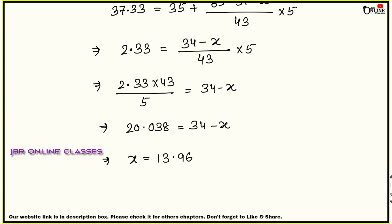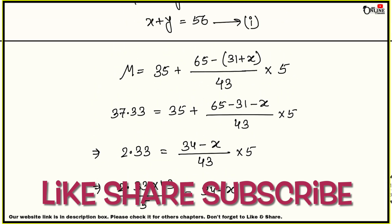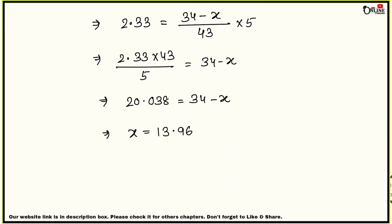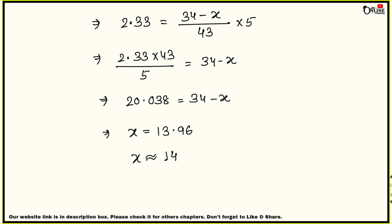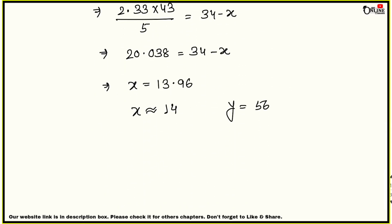Since x ≈ 13.96, we approximate x = 14. Since x + y = 56, y = 56 − 14 = 42. When a non-whole-number result appears, convert to the nearest whole number. So x = 14 and y = 42 are the final answers.